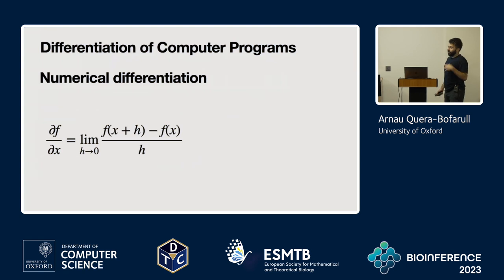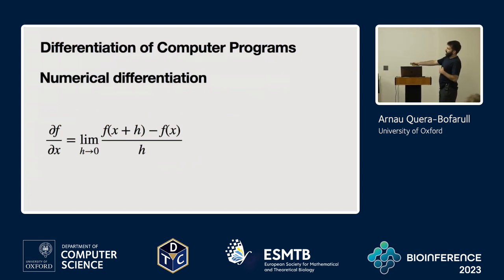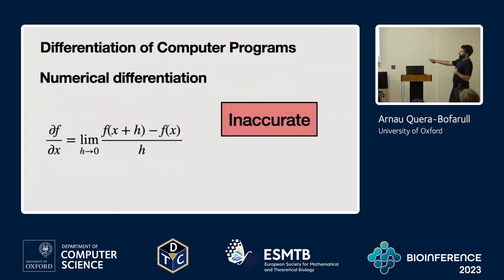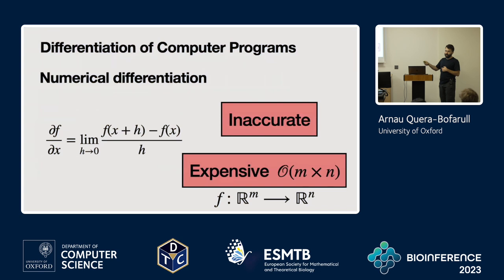We all know from the first year of undergrad how to compute basic numerical differentiation of a computer program. One way is to take the basic definition of the derivative and compute the limit. This has problems because it's often inaccurate — you have to choose a step size and it's not always ideal. On top of that, it's very expensive: if you have a simulator from R^M to R^N you typically need to do M times N evaluations, which may be very expensive.